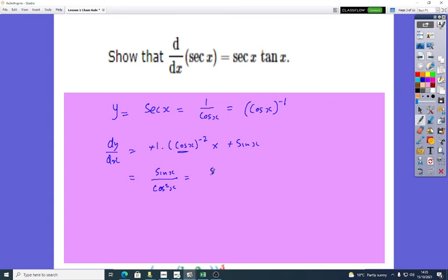Which is the same as sine x over cos x times one over cos x. One over cos x is sec x. And sine over cos is tan x. So the differential of sec x is sec x tan x. Beautiful.